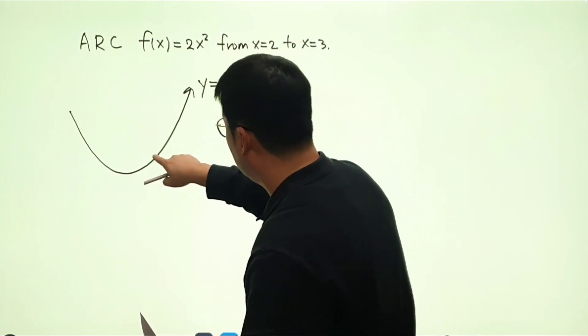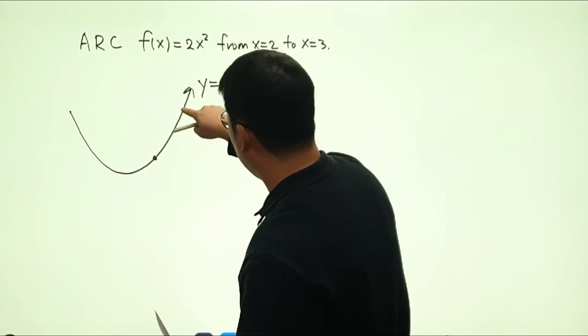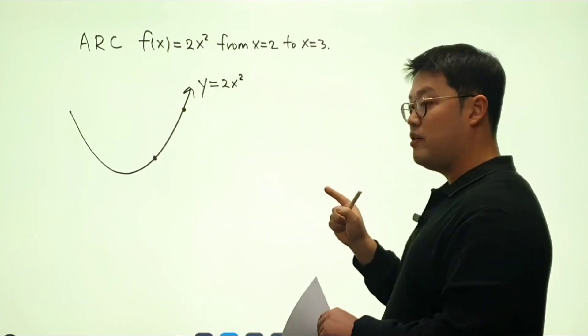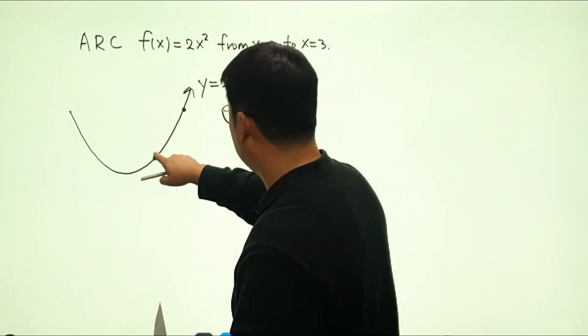And if I locate x equals 2, and if I locate x equals 3, well, eventually what we're looking for is the slope of that line segment.